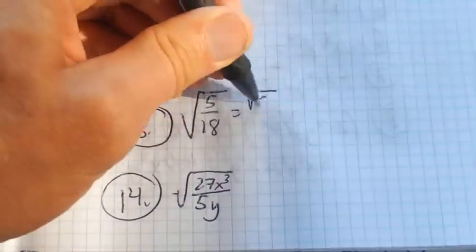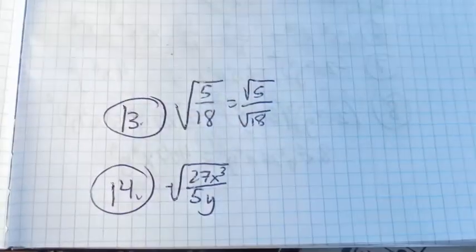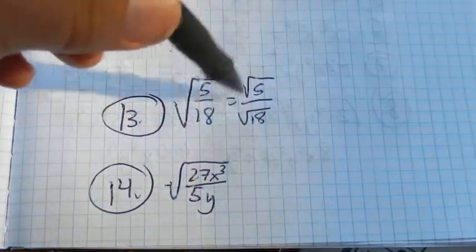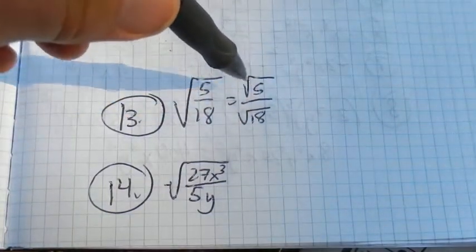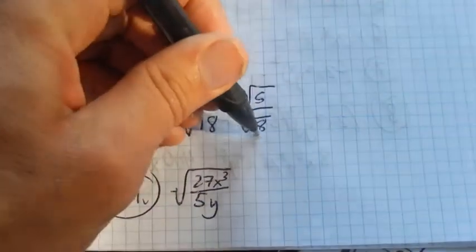This is the same as square root of 5 over the square root of 18. Now, square root of 5, I can't get any squares out of that. Square root of 18, I can. 18 is 9 times 2.